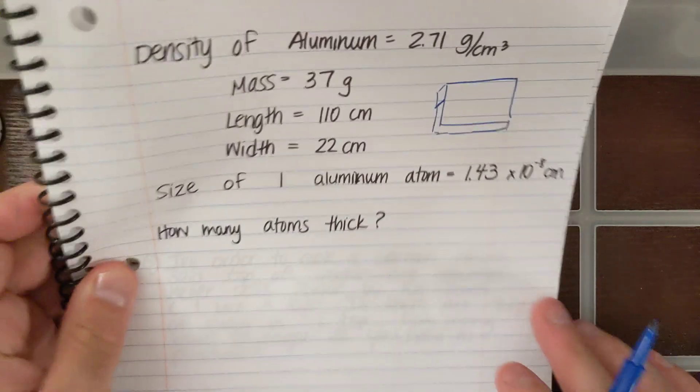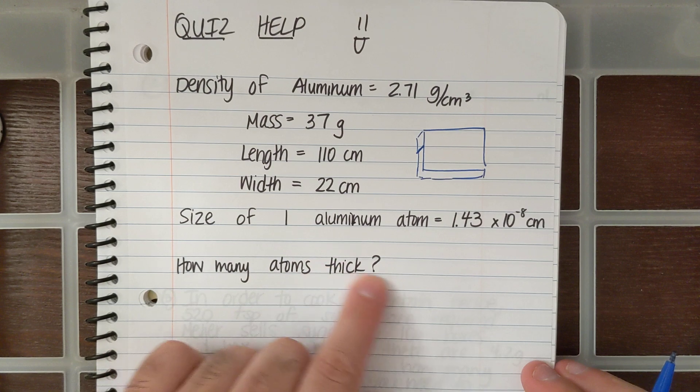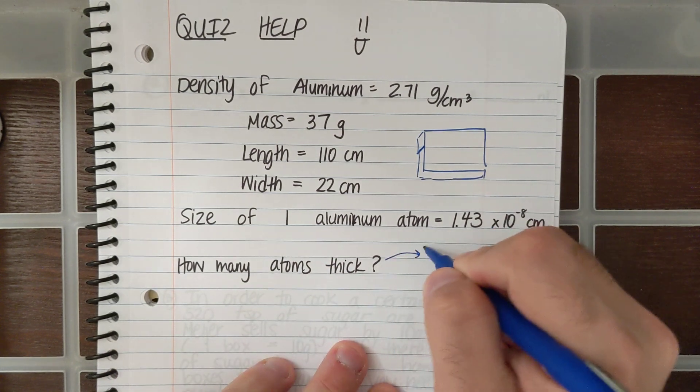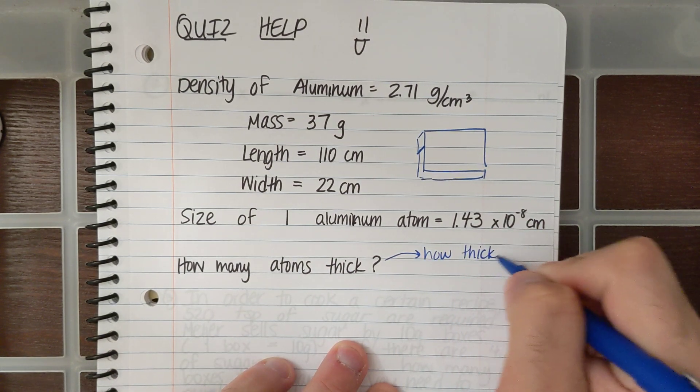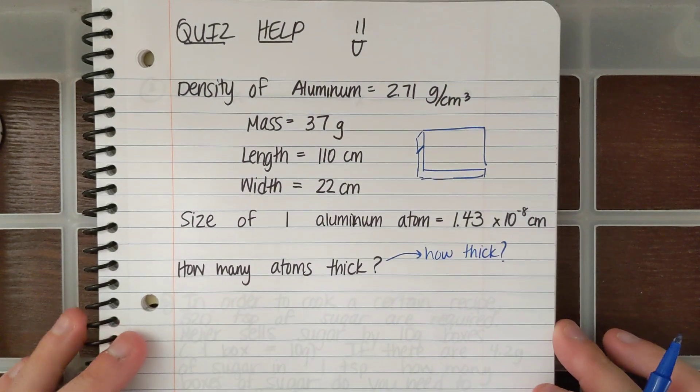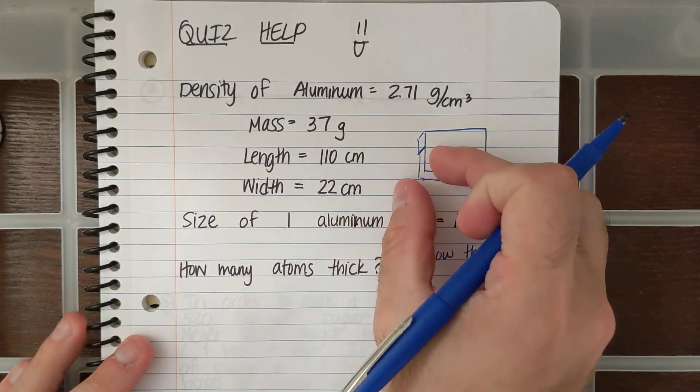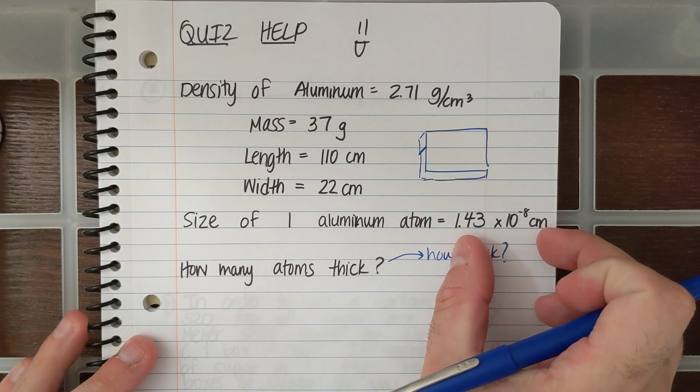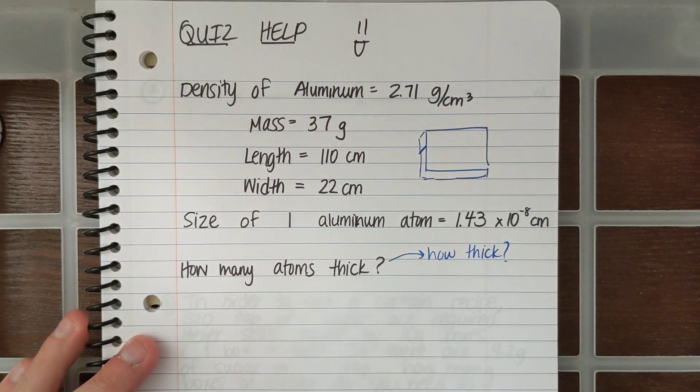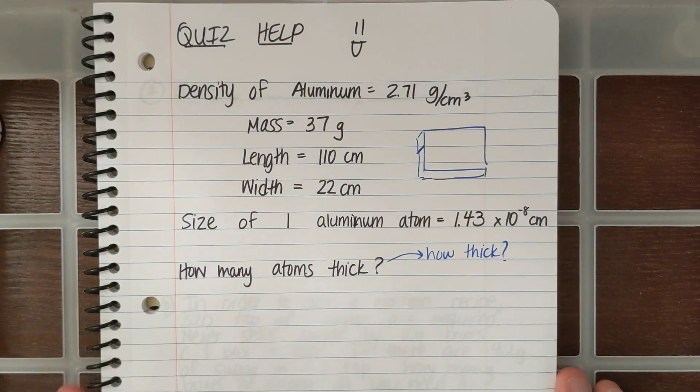This is skipping a bunch of steps. In order for me to figure out how many atoms thick, I need to know how thick it is first. So you're going to have to think about thickness. If I know how thick that is and I know the size of one of the atoms, I can figure out how many atoms thick it is.